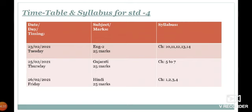Timetable and Syllabus for Standard 4th: 23 February, Tuesday, English 2, chapter number 10, 11, 12, 13, 14. Timetable and Syllabus for Standard 5th: 23 February, Thursday, English 2, chapter number 7, 8, 9, 10, 11.